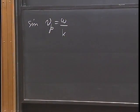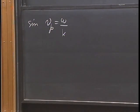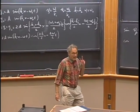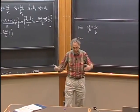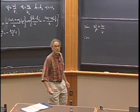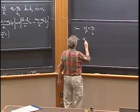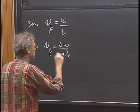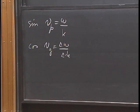The cosine term has a very different velocity: delta omega divided by delta k. That is what we call the group velocity. If the phase velocity and group velocity are the same, it is a non-dispersive medium. But if the two are different, you will see the envelope moving with a different speed than the individual wave crests.